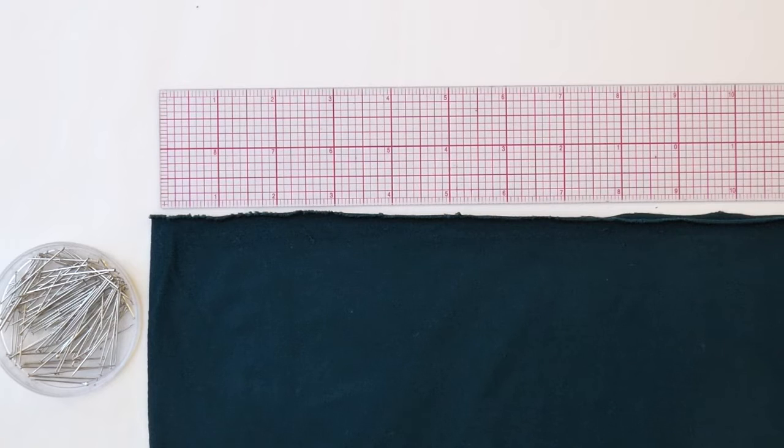Now let's determine the stretch ratio of the lengthwise grain of our fabric. As I said before, we need to be sure that we will be working with the greatest direction of stretch going around the body. Although this is most often the crosswise grain, which we determined earlier, in some specially knit fabrics it may be the lengthwise grain. So you're going to go through the exact same steps to check the lengthwise grain of your fabric for its stretch ratio.